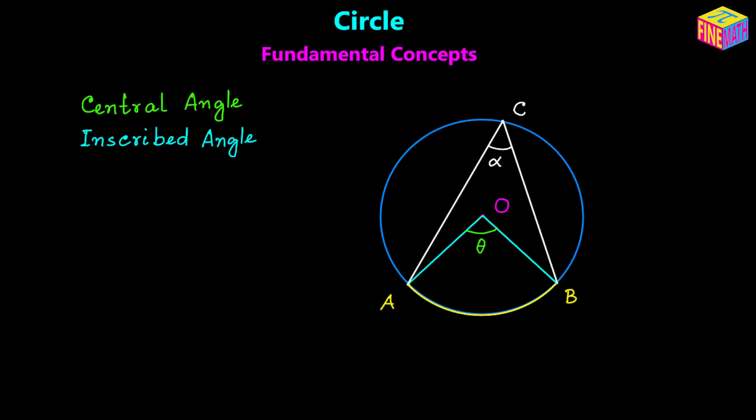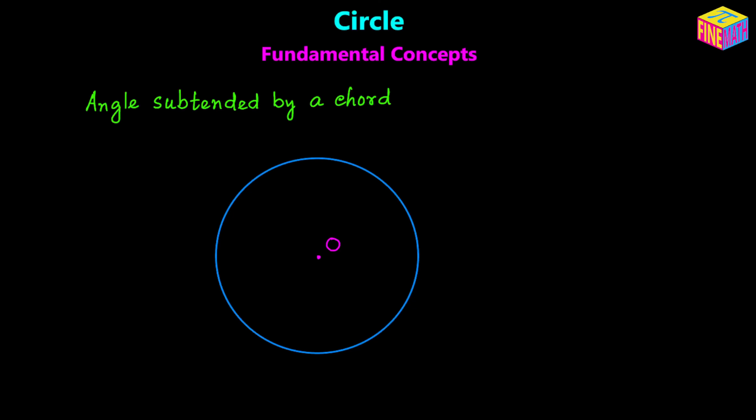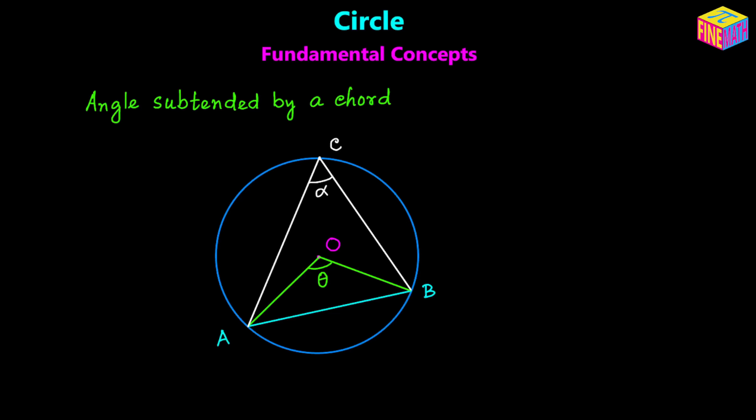Next we are going to discuss about the angle subtended by a chord. With center O and chord AB, the central angle is theta — the angle AOB subtended by the chord at the center. Taking a point C on the major arc and connecting it with A and B, the angle formed at C, denoted alpha, is called the angle subtended by the chord on the major arc. Taking a point D on the minor arc and connecting with A and B, the angle formed, denoted beta, is the angle subtended by the chord on the minor arc.